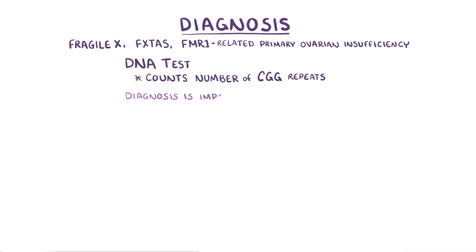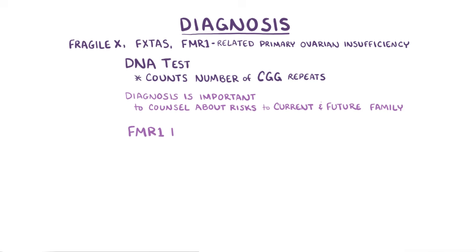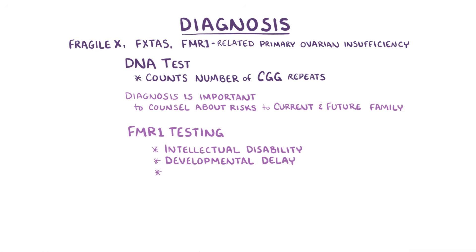It's important to make the diagnosis in order to counsel the individual about the risks of the diseases in current and future family members. FMR1 testing is often done for individuals with intellectual disability, developmental delay, or autism, and carrier testing can be done for pregnant women.